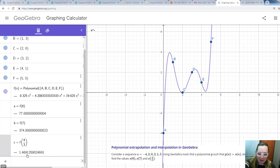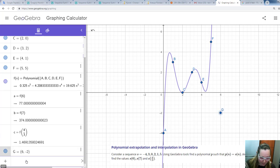If, for example, we have some additional data. For example, we know that the next term of the sequence is minus 2. So this is the term with index 6 is minus 2. So we have this additional point.